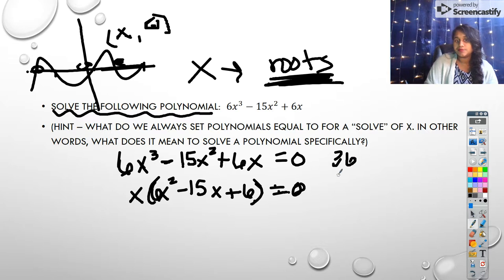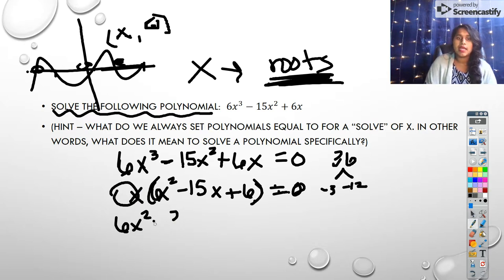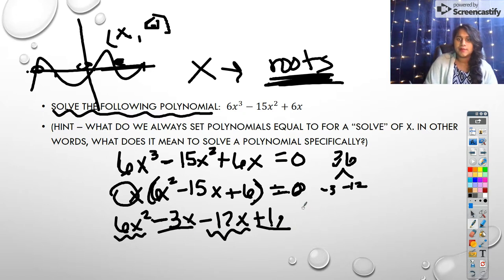So a times c is 36. And if I find factors of 36, they're going to get back to 15. We're actually looking at negative 3 and negative 12. So that becomes 6x squared. I'm going to ignore this x on the outside for a second. 6x squared minus 3x minus 12x plus 6. And I'm going to group 6x and negative 12, and I'm going to group negative 3x and 6.